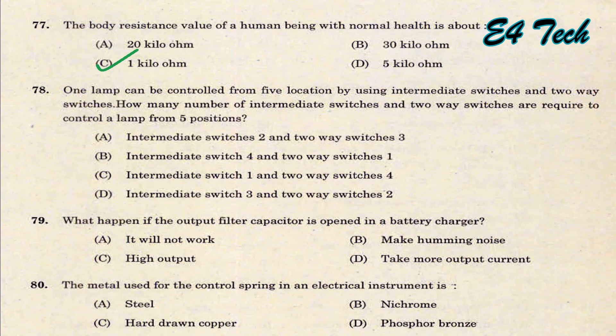One lamp can be controlled from five locations by using intermediate switches and two-way switches. That is option D. If the output filter capacitor is opened in a battery charger, it produces a humming noise. That is option B.